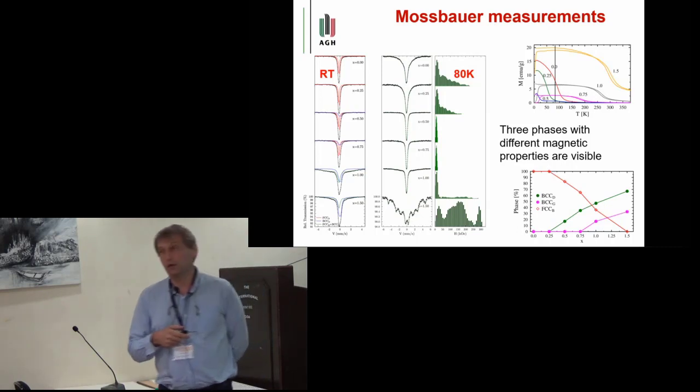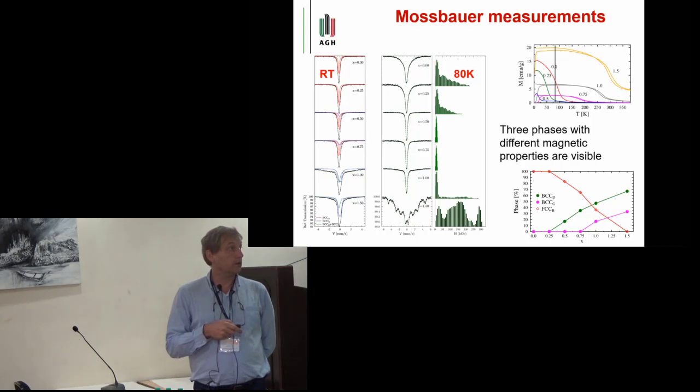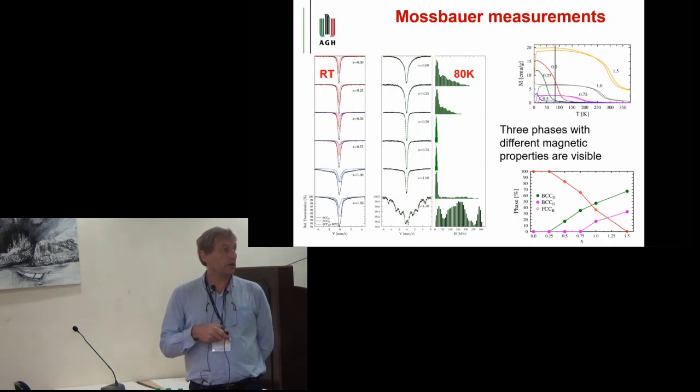At liquid nitrogen temperature, the first two samples became magnetic, the next two are still in paramagnetic state, and here we have magnetic and paramagnetic states, maybe paramagnetic with some magnetic traces, and this is a fully magnetic spectrum of the sample.